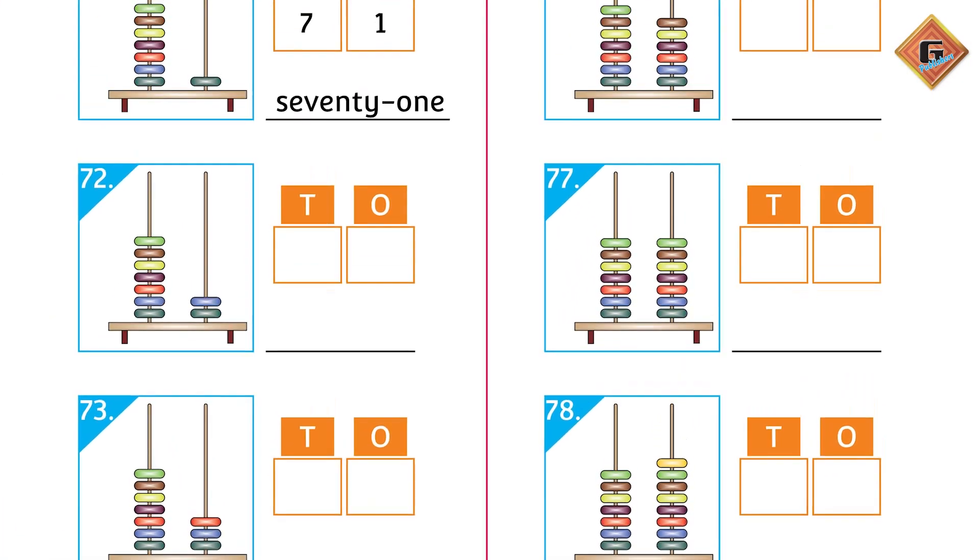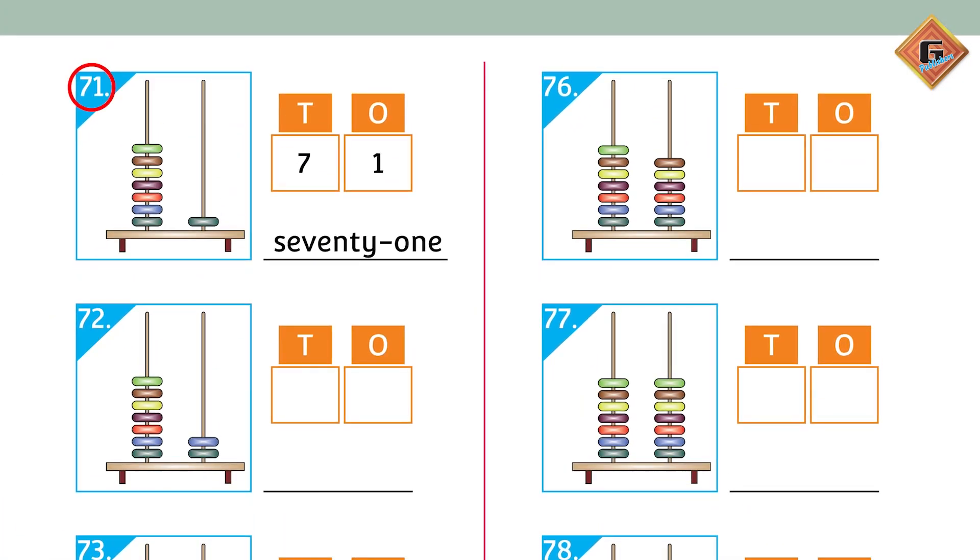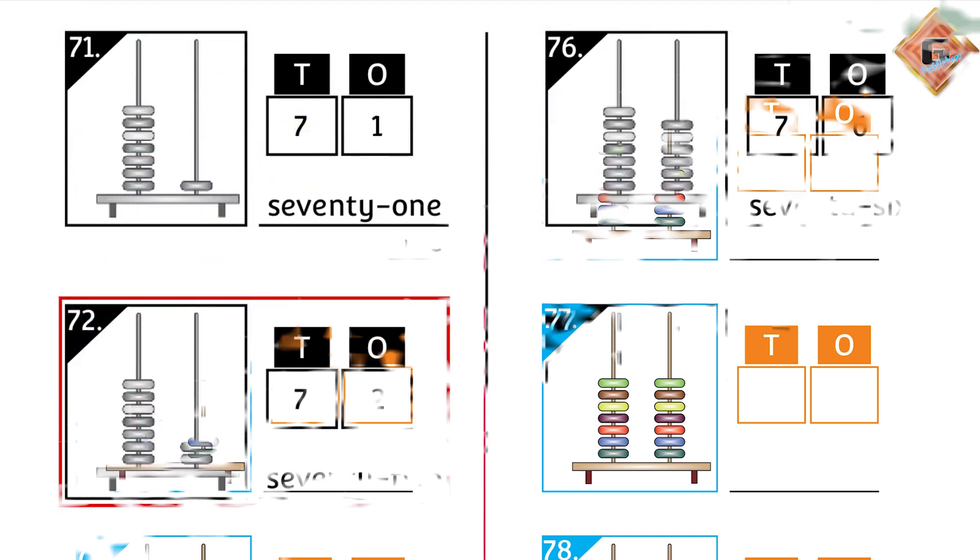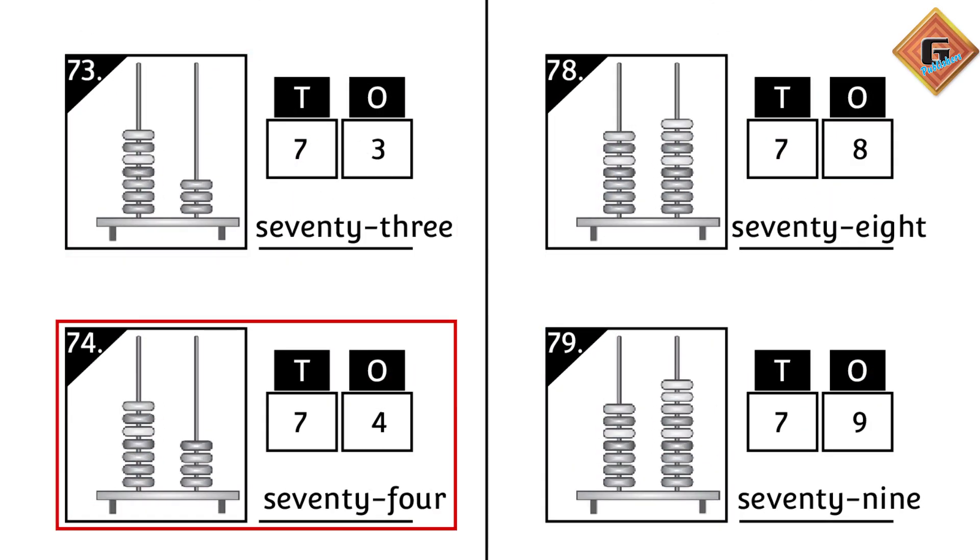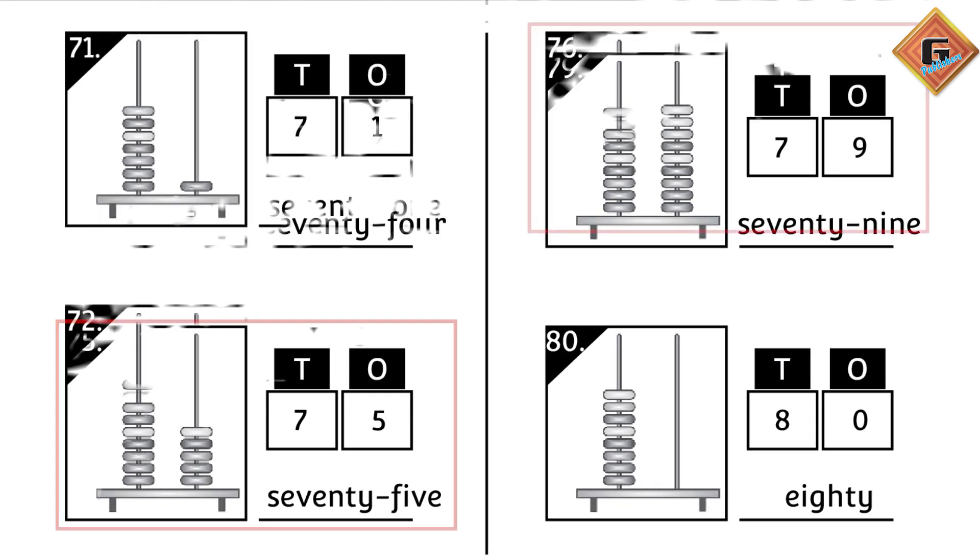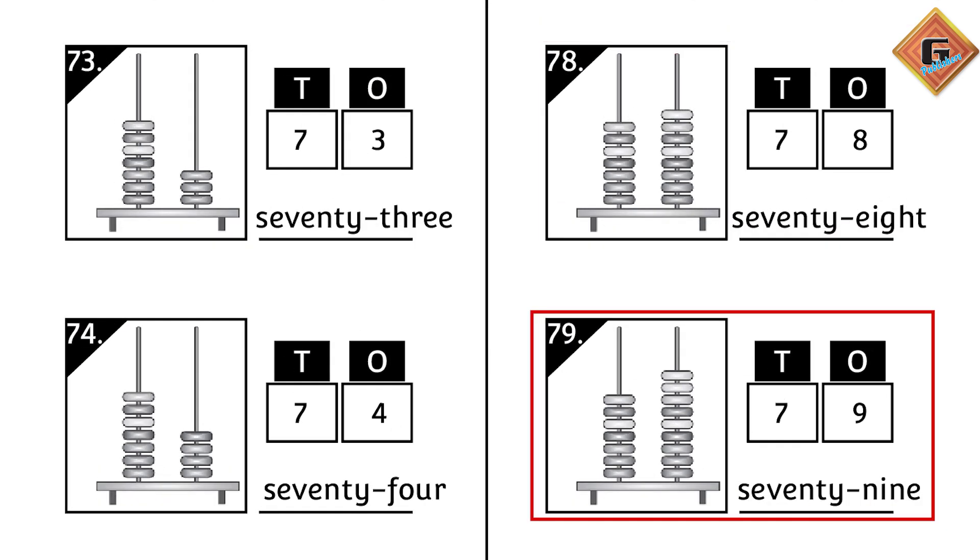Move to the next page. Same process. On the ones rod there is one bead and on the tens there are seven. The number name is 71. After 71 we continue counting: 72, 73, 74, 75, 76, 77, 78, 79.